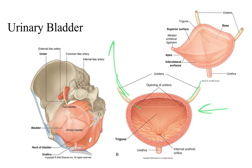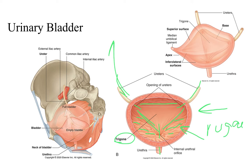Where the two ureters enter the urinary bladder and where the urethra exits form a triangle called the trigone. In the empty state, the urinary bladder has folds called rugae. The rugae allow the urinary bladder to stretch when it fills up, giving it room without tearing the mucosal layer within.